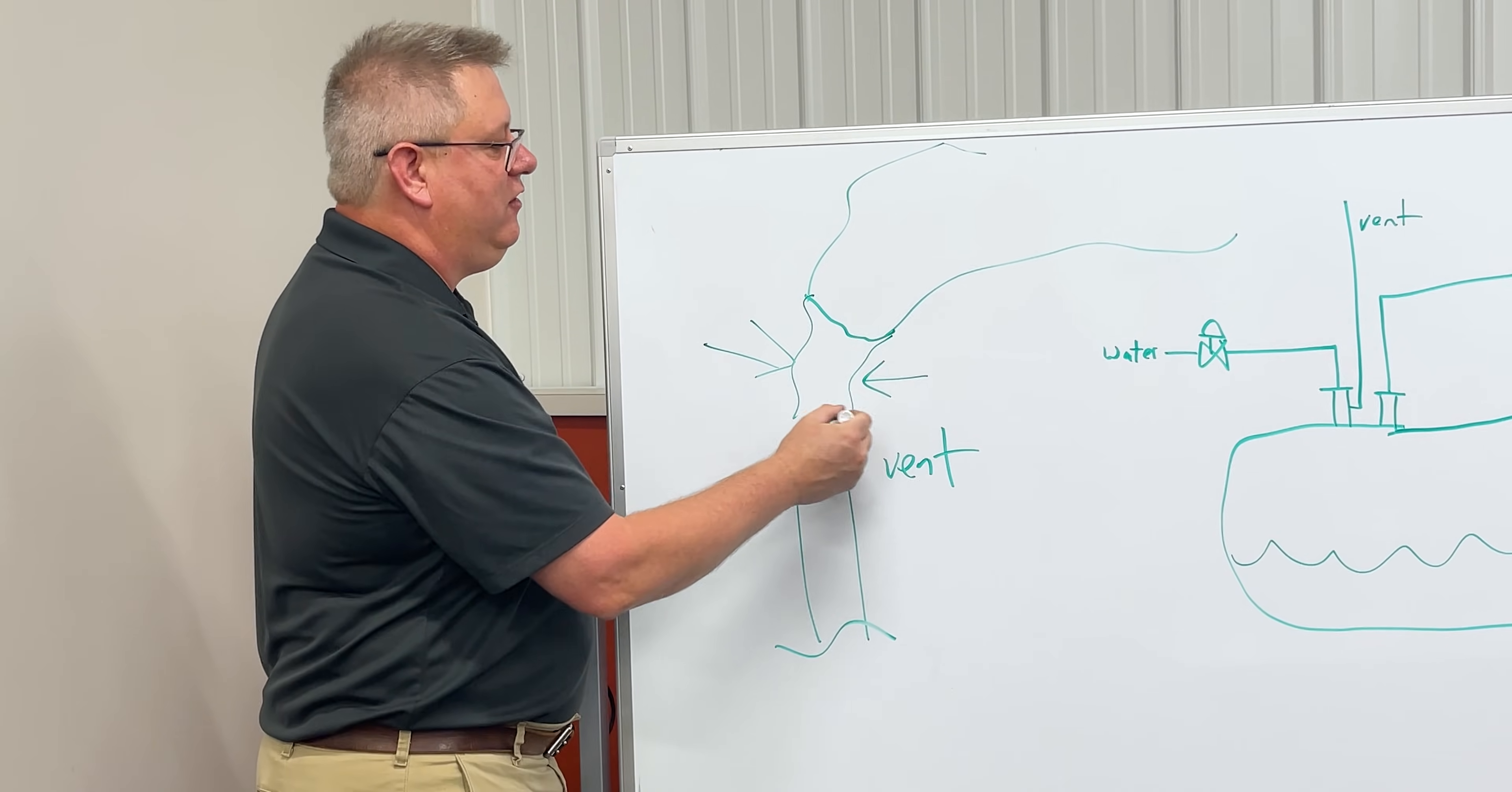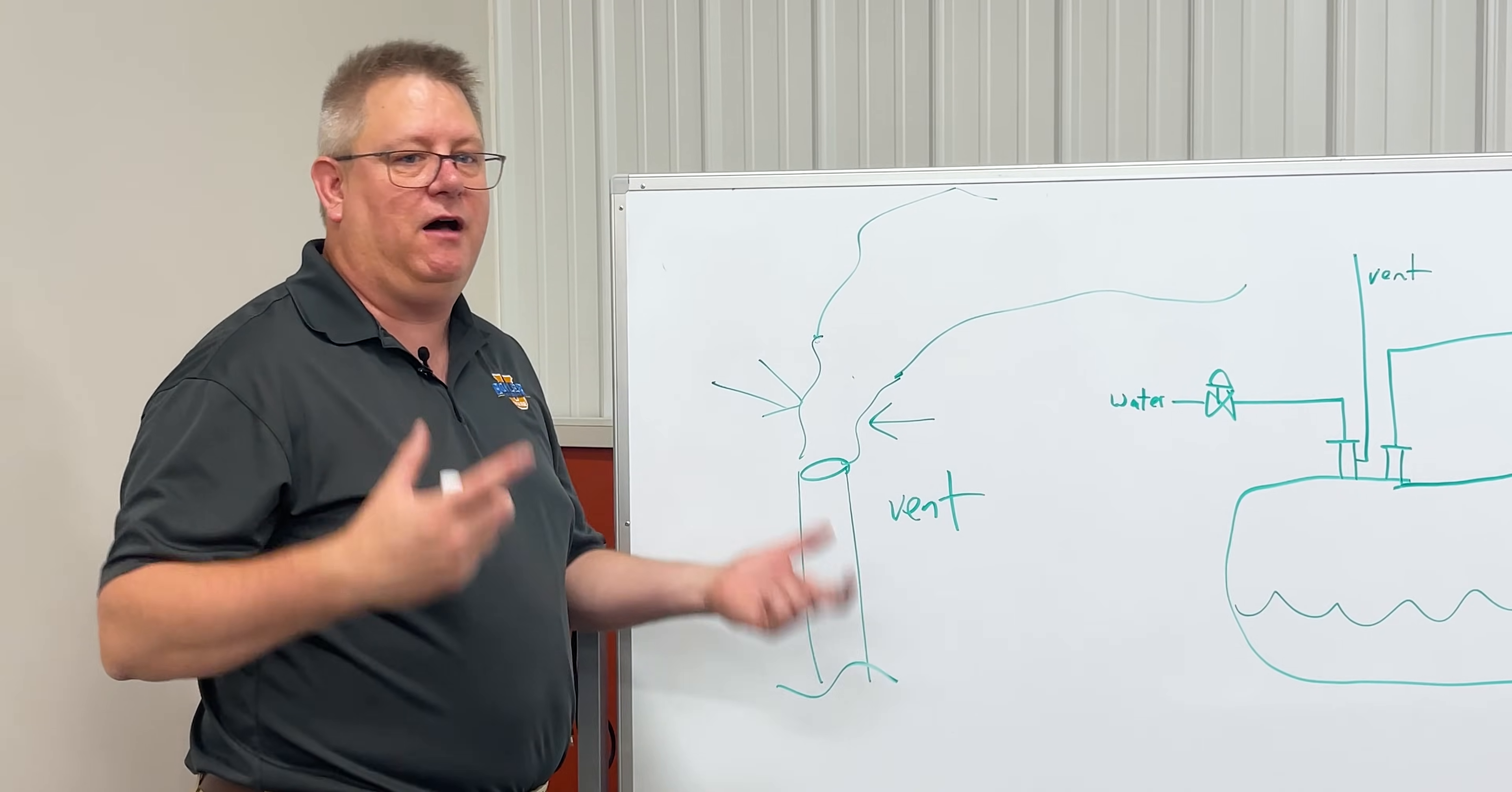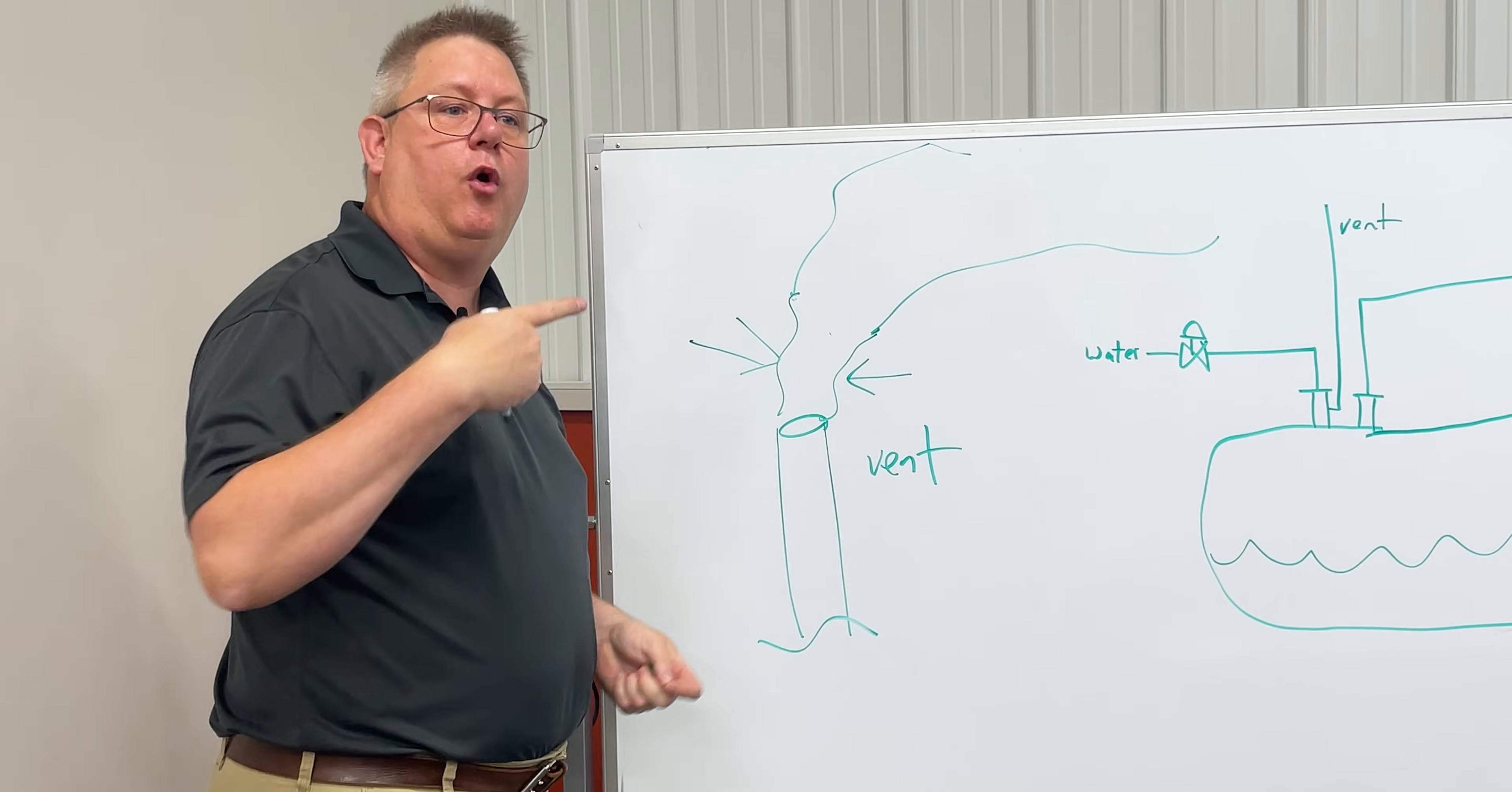That orifice is sized for the normal makeup on the deaerator. If you purchased that deaerator and it was stated you were going to have 60% makeup, but in reality you've got 100% makeup, that vent is going to have to be open farther or you're going to need a bigger hole in the seat of the vent. Just keep in mind it was designed to be closed with the orifice in the valve doing the job.